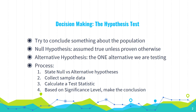Depending on the test, a different test statistic is going to be calculated. Then, based on the significance level of our test, we make the conclusion. We can do the conclusion in a couple of different ways, but this is basically the process. We make a conclusion based on the significance level, take into account the test statistic, and state your conclusion.